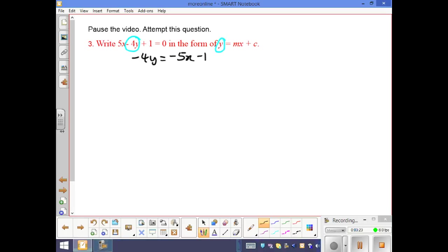Here is negative 4, I need to divide both sides by negative 4 to isolate Y. So that will become Y. Negative 5 over 4 will become 5 over 4X, and then negative 1 over 4 is just plus 1 over 4.